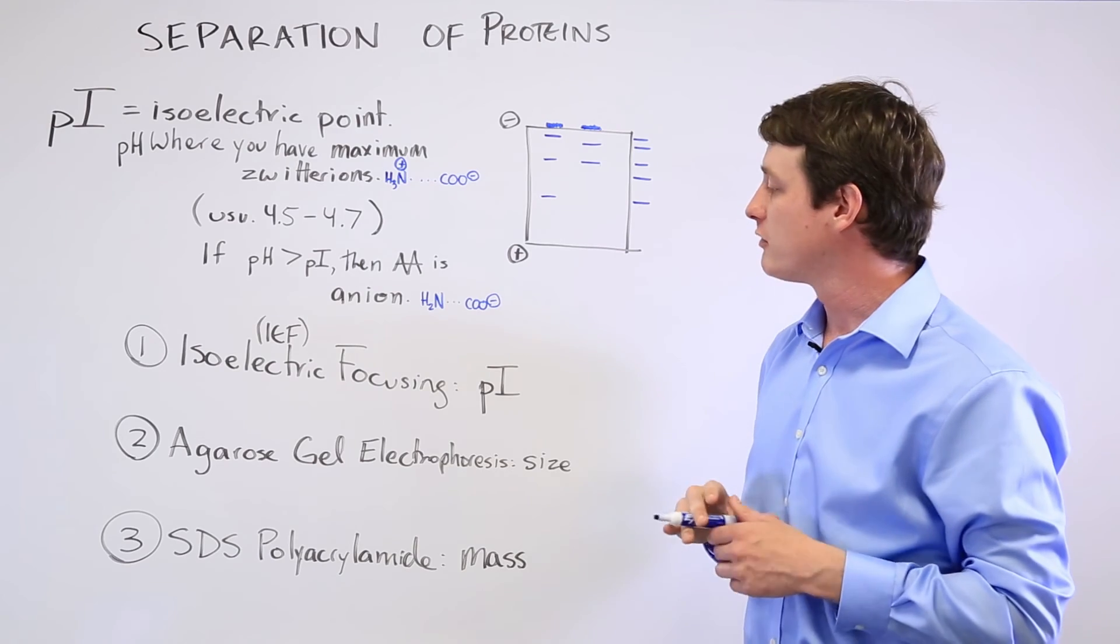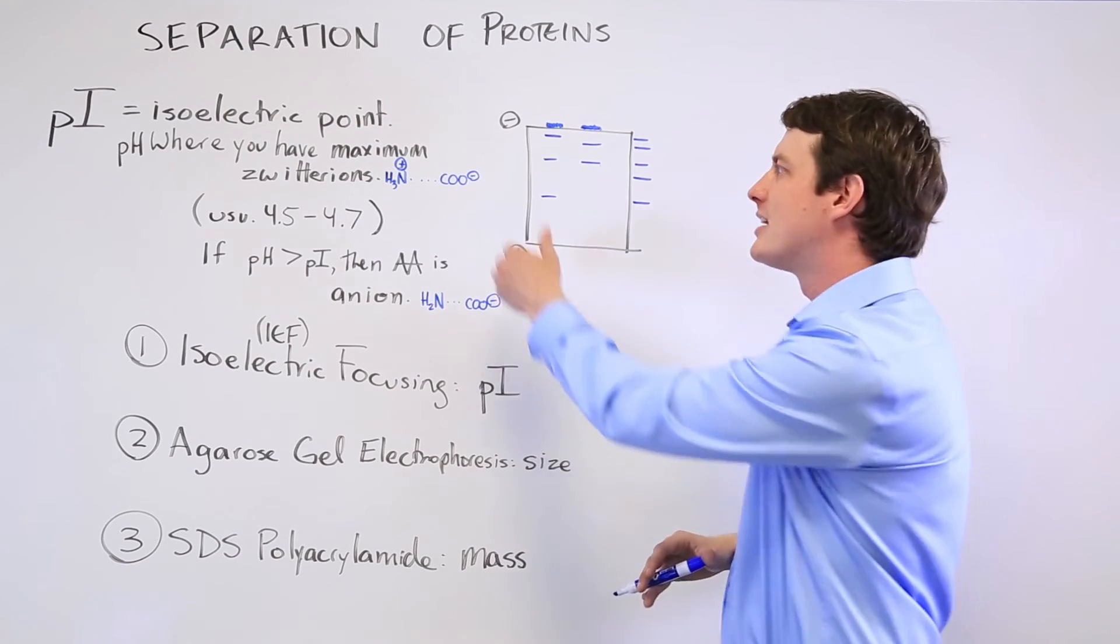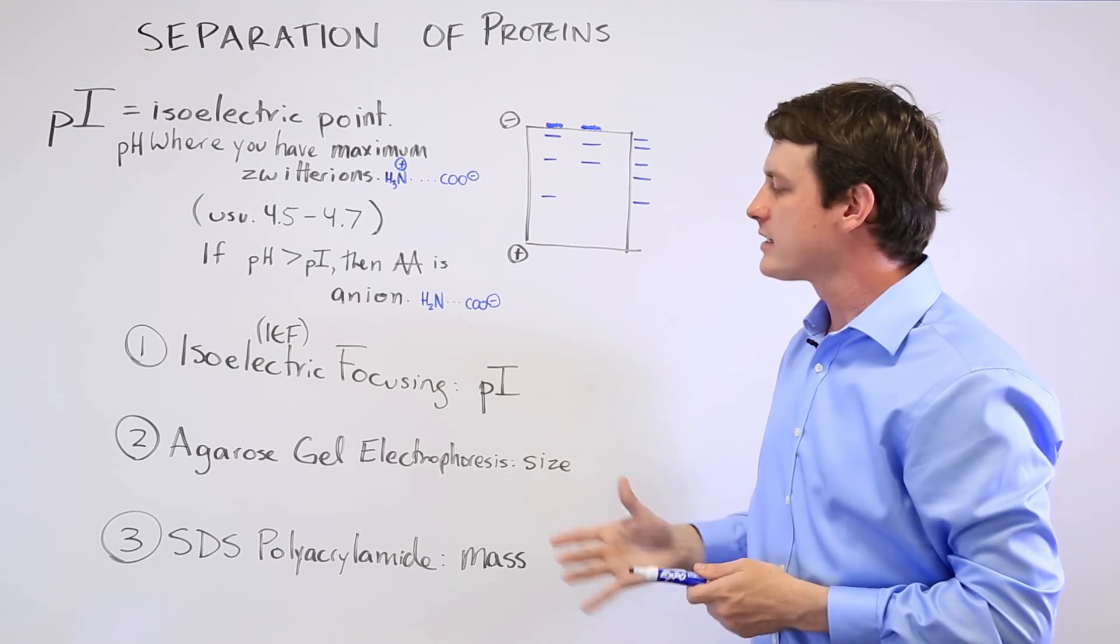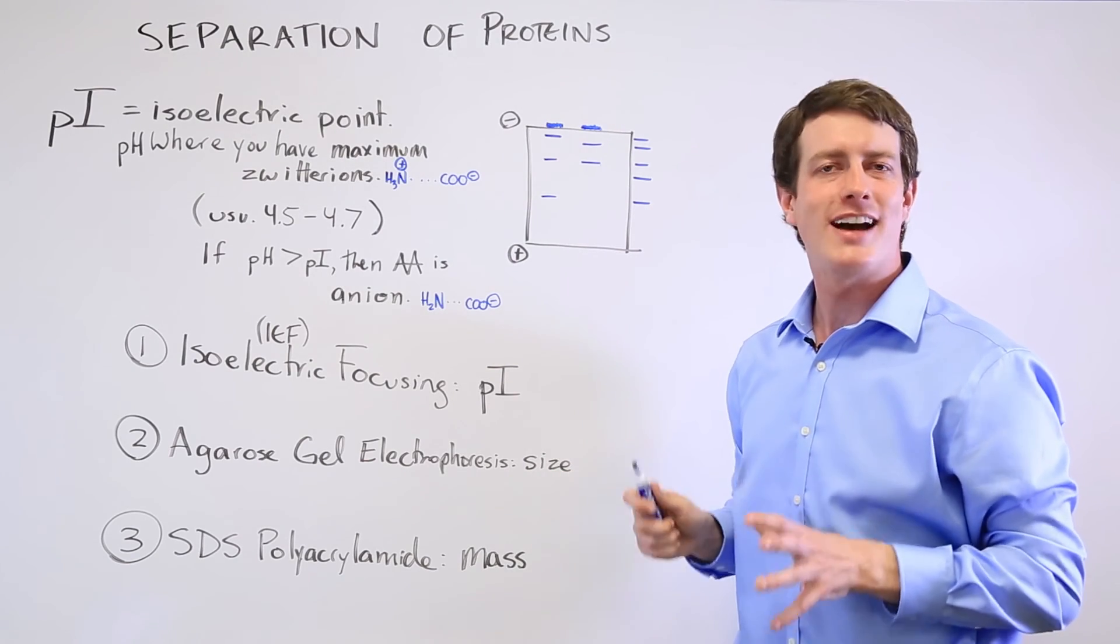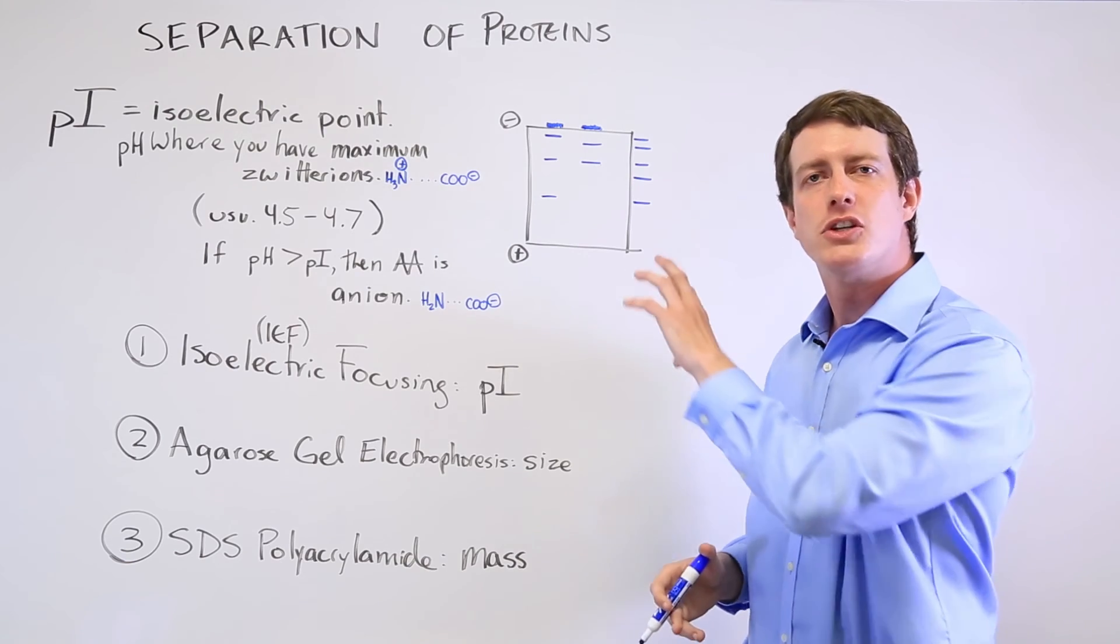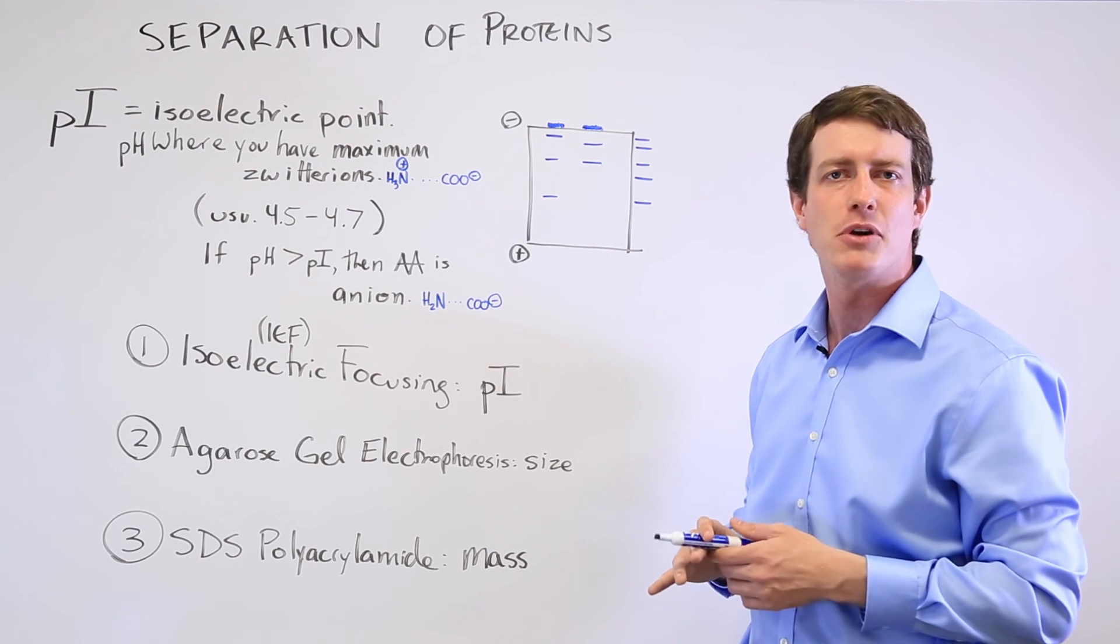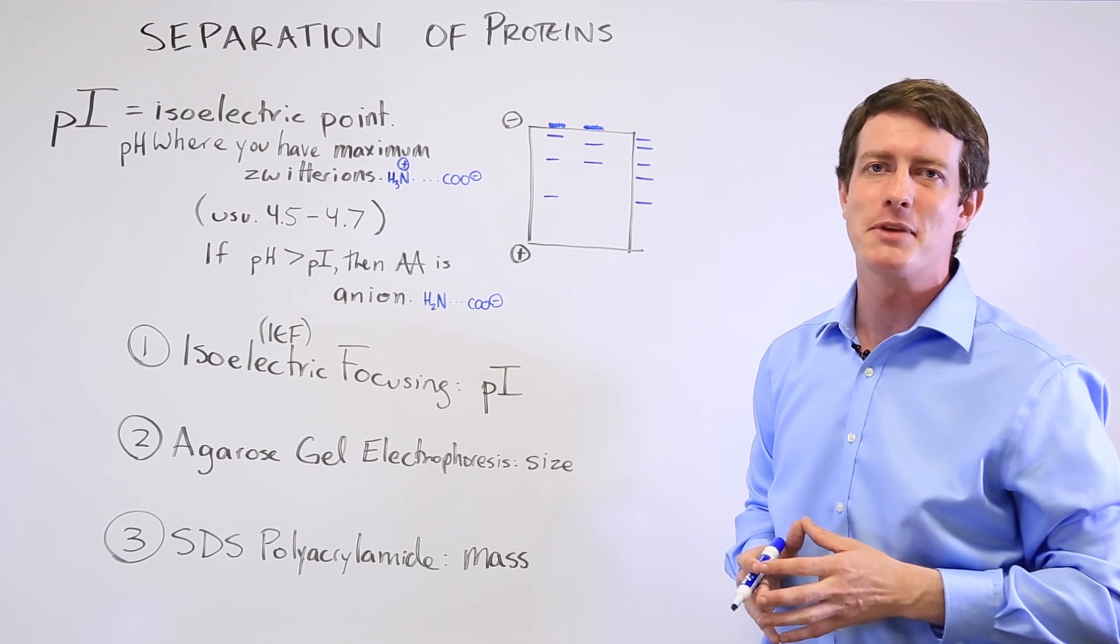Agarose gel electrophoresis is purely based on the size because they don't set up a pH gradient there. And the SDS polyacrylamide, just know that that separates it by mass. And if you understand these three distinctions, then you'll be able to answer any protein and amino acid separation question that you encounter on the MCAT.